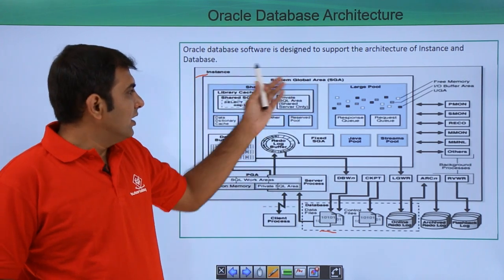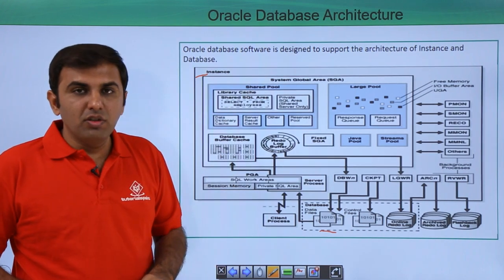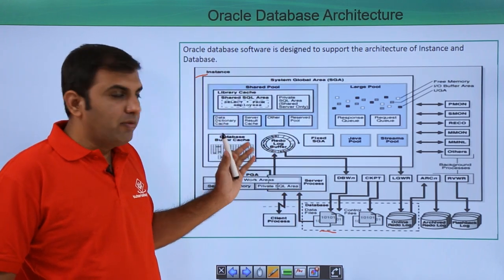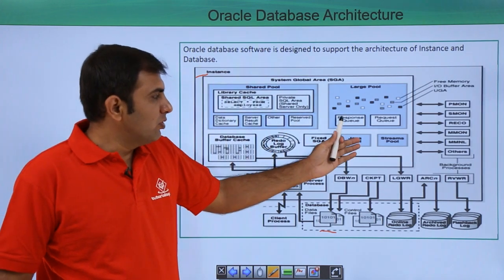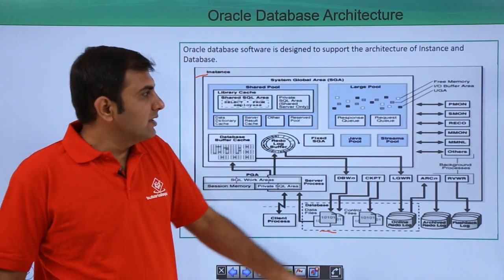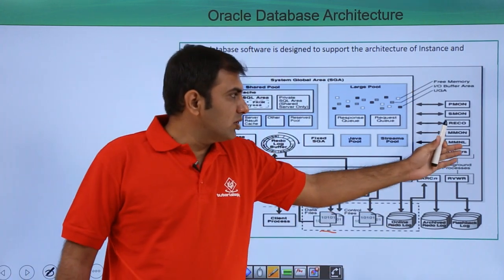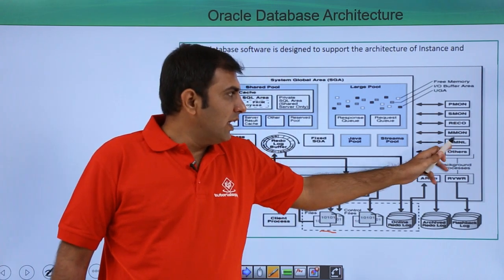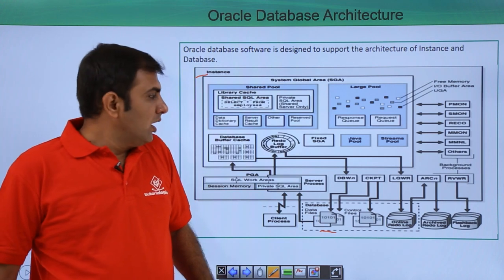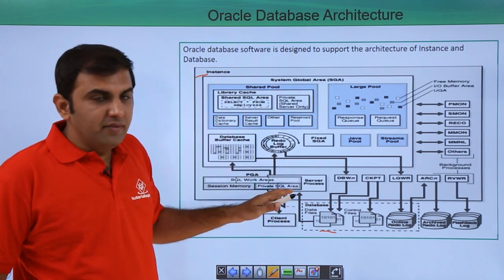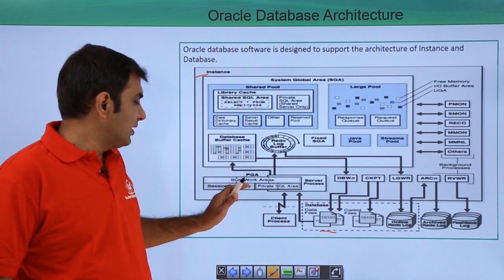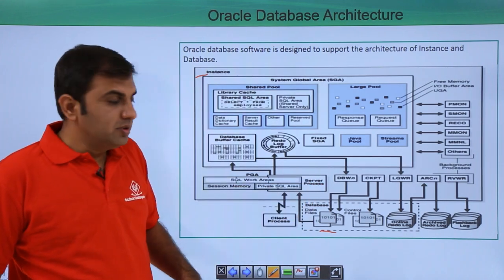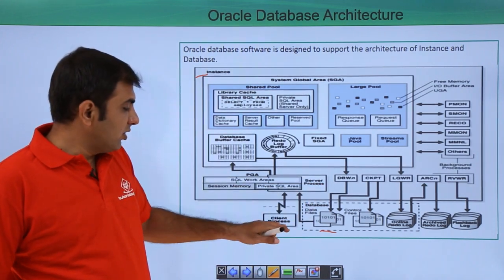The components of the System Global Area are: the shared pool area, database buffer cache, redo log buffer, large pool, Java pool, and stream pool. The background processes include PMON, SMON, RECO, MMON, MMNL, and others. The PGA area contains the SQL work area, session memory, and private SQL area, which is associated with one server process and the client process.